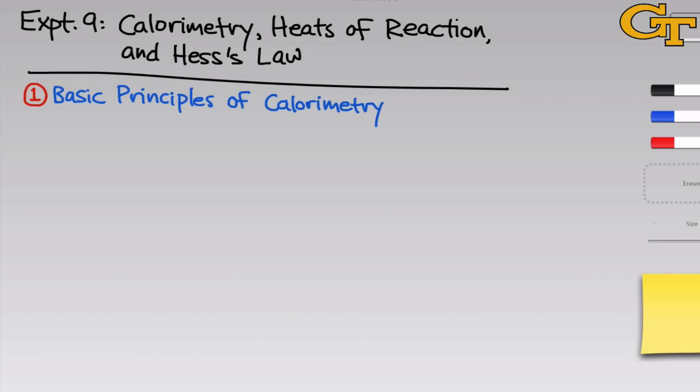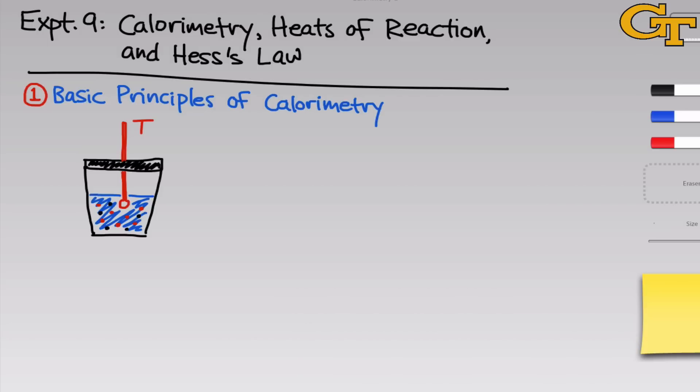Let's begin with some basic principles of calorimetry. The essential device for any calorimetry experiment is called a calorimeter. That's a fancy term for a well insulated vessel containing a thermometer or other temperature measuring device that allows us to measure the temperature of the contents inside. Inside the calorimeter, we place a solution of the reactants for the reaction we'd like to study. For us, this so-called bath solution will consist of water and hydrochloric acid, and that solution will surround the magnesium or magnesium oxide reactant.